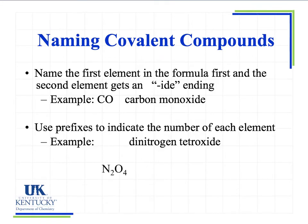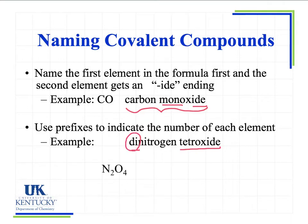So I want to name the first element in the formula first, and the second element gets the -ide ending. For example, CO is carbon monoxide — we have the -ide ending, carbon doesn't change. These prefixes help us indicate the number of each element. Here we have dinitrogen tetroxide, so 'di' is the prefix for the first element and 'tetra' is the prefix for the second. We'll go through a list of those prefixes and talk about some of the rules.